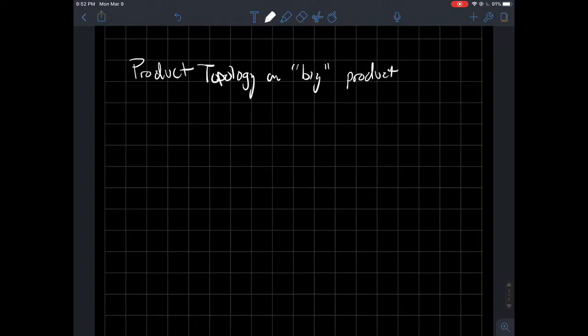In the previous video I talked about how to put the product topology on two topological spaces. What if we took the Cartesian product of infinitely many? For finitely many things in your product, everything works like it did in the previous video.